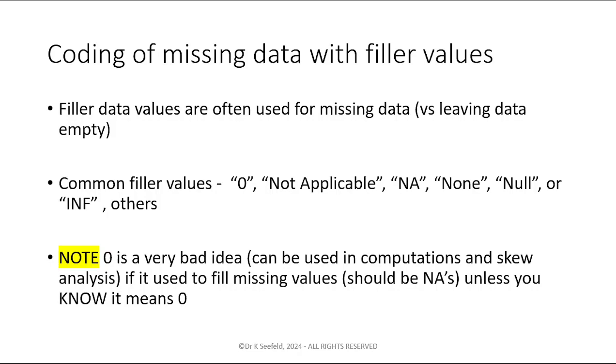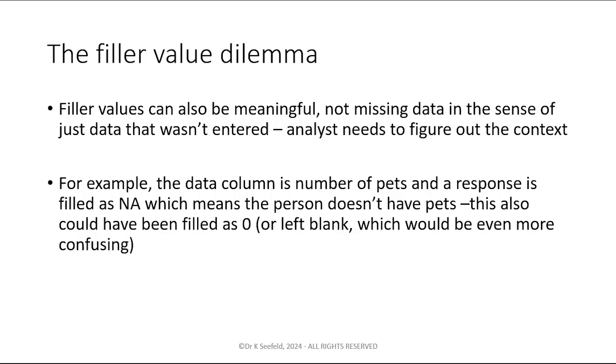Filling things in with zero is generally a very bad idea unless it's a specific context, like we looked at in the earlier video with people eating meat number of times per week. If they filled an NA, it probably means they didn't eat meat, which is a zero, so that would be valid. Filler values can be meaningful. For example, if the data column is number of pets and the response is NA, that most likely means a person doesn't have a pet, so that could be filled in as a zero. But in some cases, it's not clear what exactly that means.